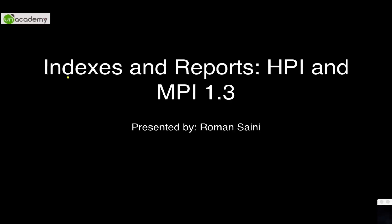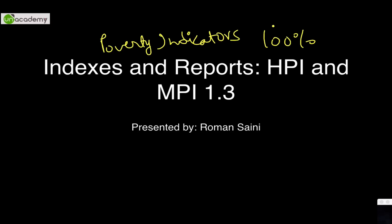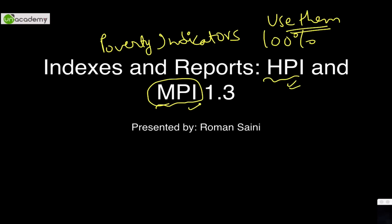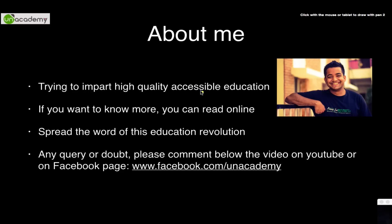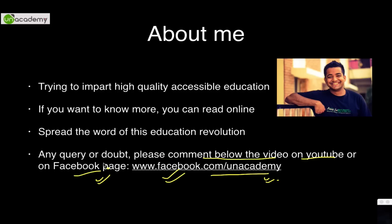Hey guys, today we're going to deal with extremely important poverty indicators. These are 100% going to be asked either in the mains or in the essay — even if they don't ask, use them as much as you can. They are highly beneficial. They are basically the Human Poverty Index and the Multi-Dimensional Poverty Index. If you have any doubt or query, you can ask on facebook.com/unacademy or comment below the video.